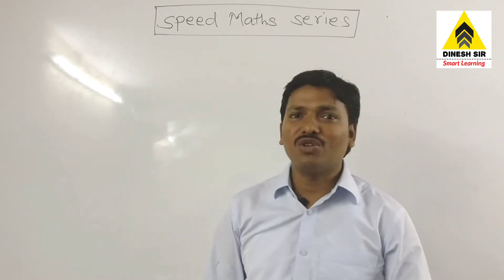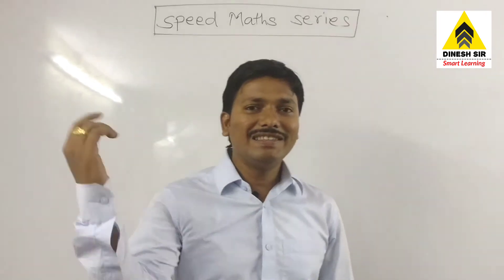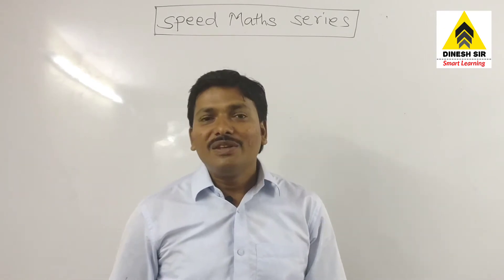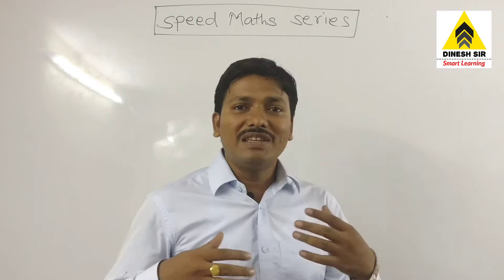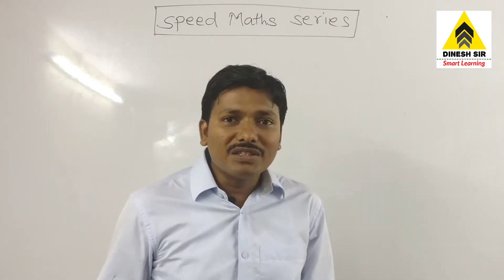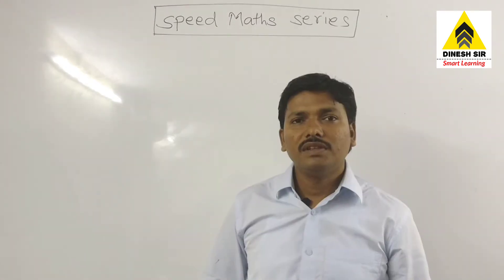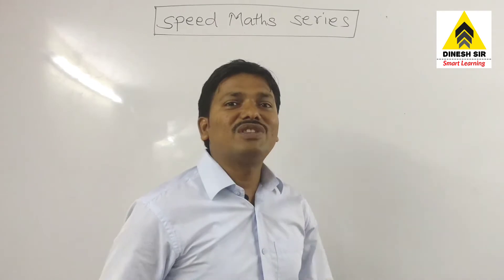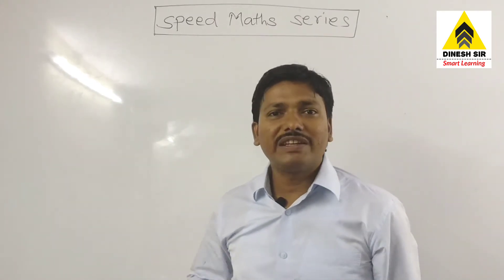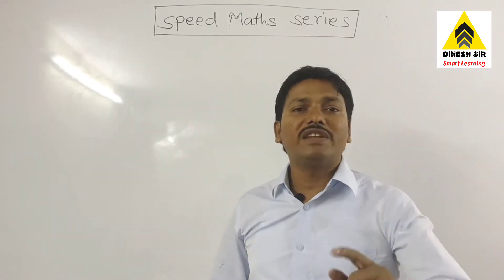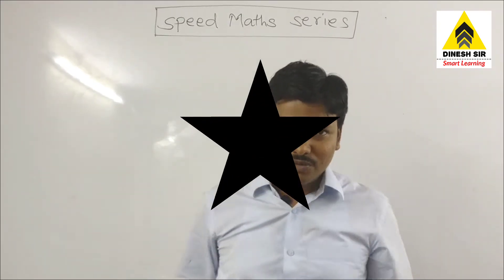Today we are going to learn a series of speed maths, and in this series we are going to take many concepts by which you can easily access various terms in a very short time. We are going to start with a square of any number, and I am going to give you a trick for the square of any number ending with 5.